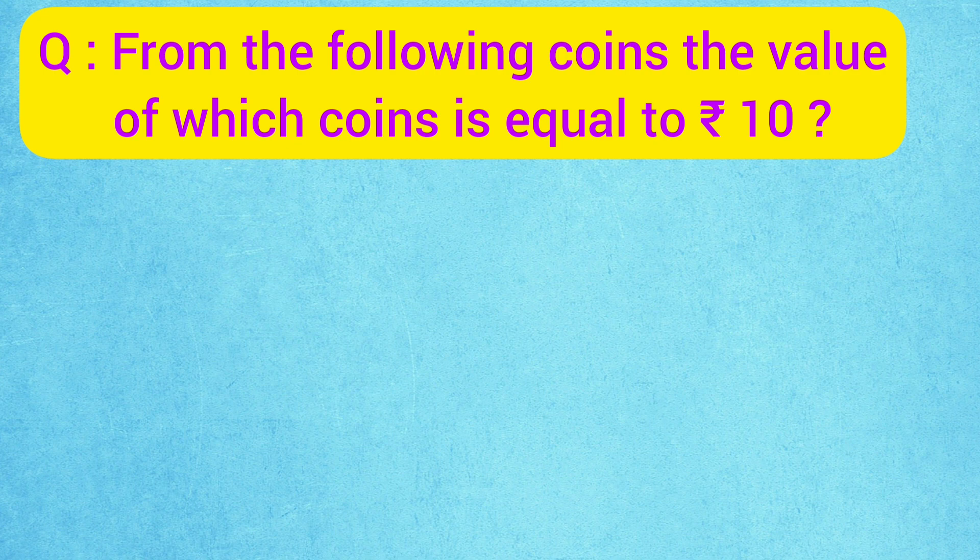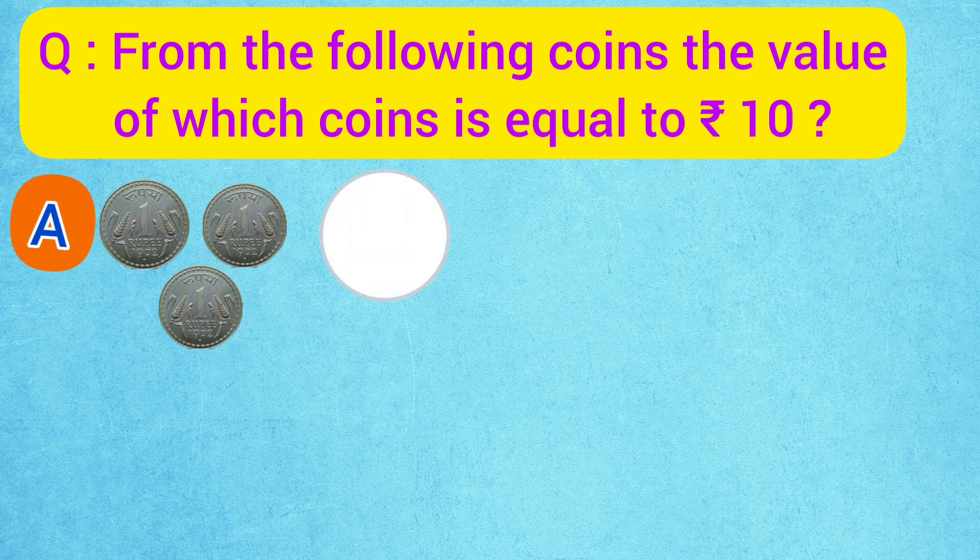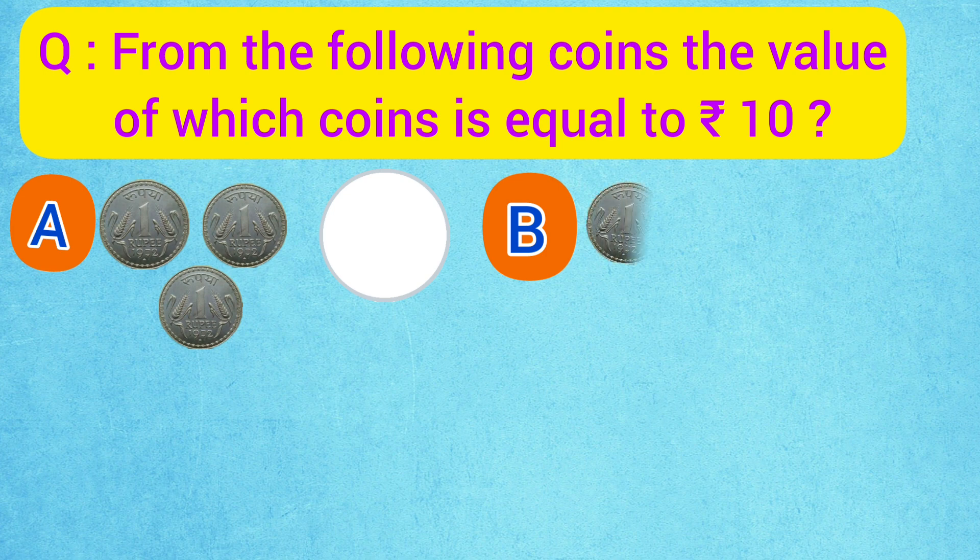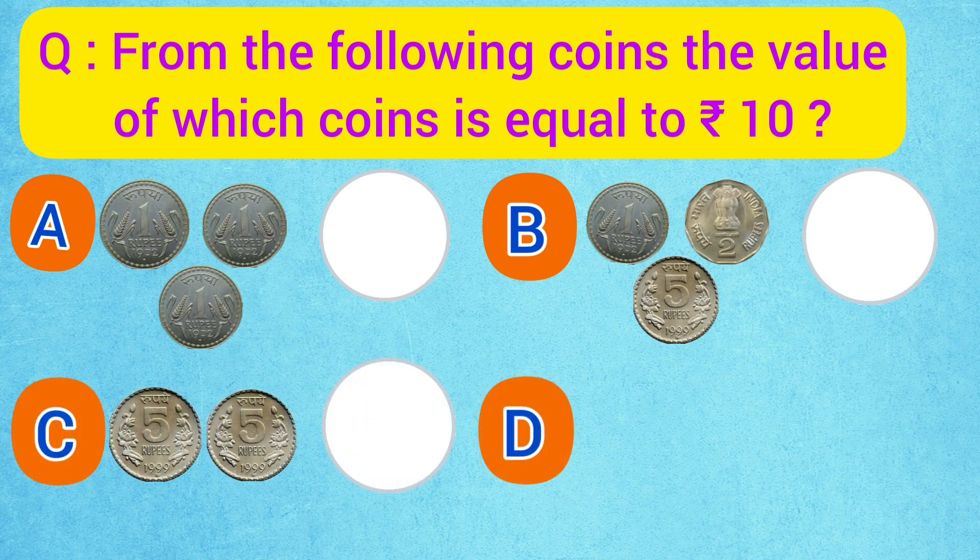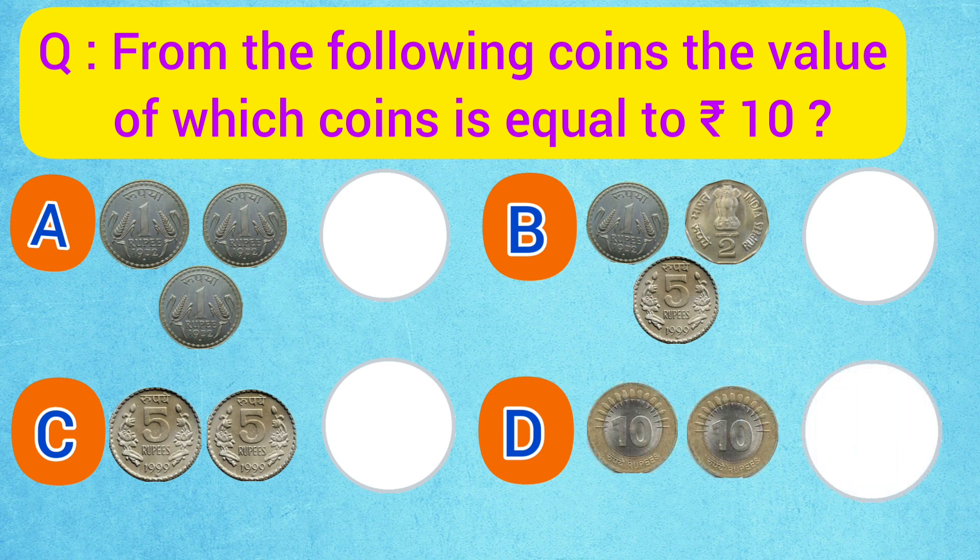Students, in option A we have 3 one-rupee coins. In option B we have 1 rupee, 2 rupee, and 5 rupee coin. In option C we have 2 five-rupee coins. And in option D we have 2 ten-rupee coins.